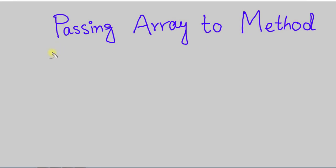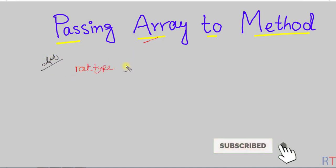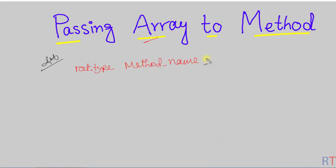In this video we're going to see how we can pass an array to a method as a parameter. To pass an array to a method, we have to define in the method definition that this method will receive one array as a parameter. While defining a method, we have the return type, then the method name, and inside the parentheses we specify the array parameter — for example, integer array x.